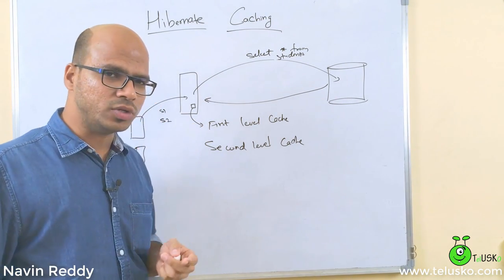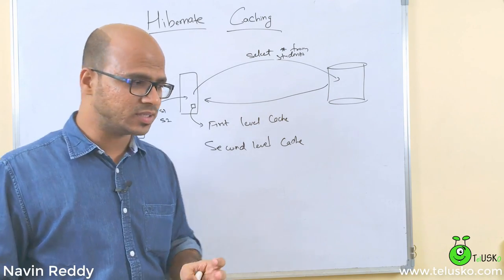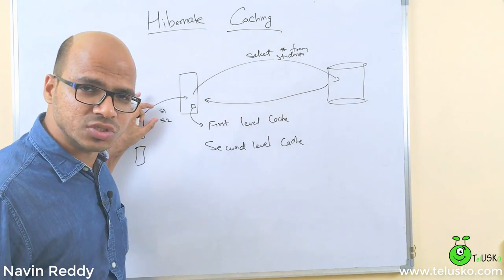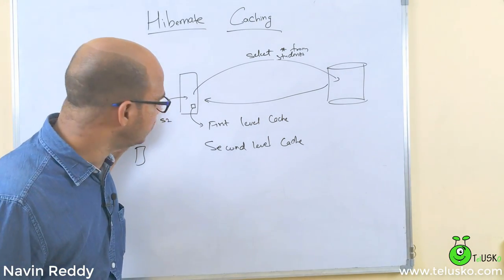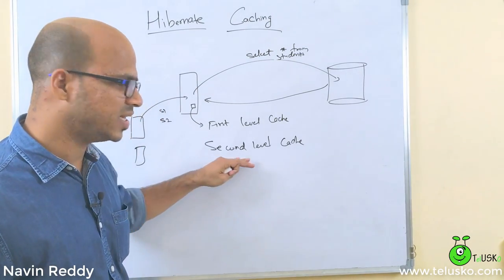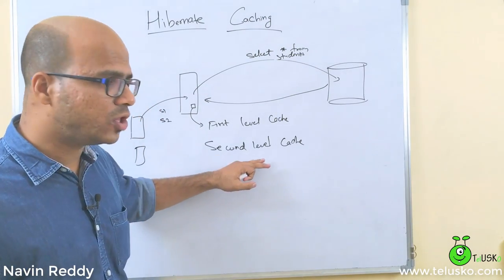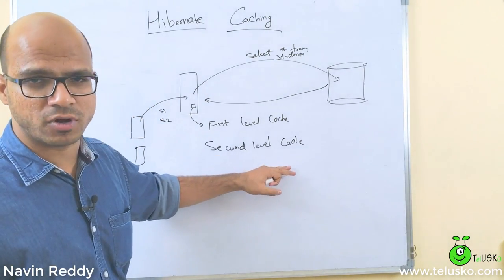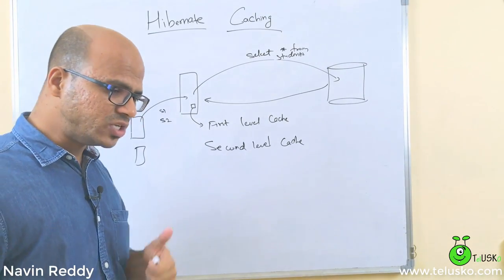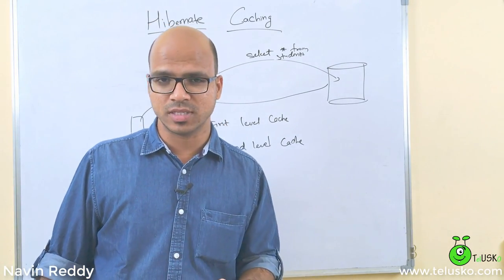If you want to use second level cache, it doesn't matter how many sessions you have — all sessions in the same application can share the second level cache. However, Hibernate does not provide this by default; you have to configure it, and for that you need to use a third party library.